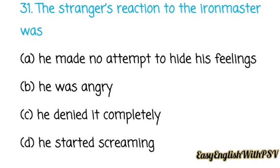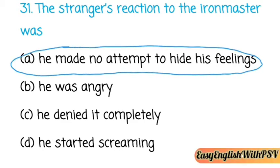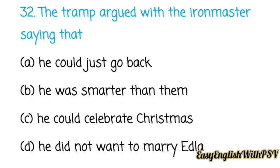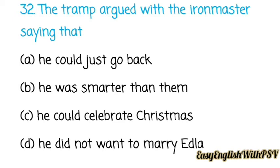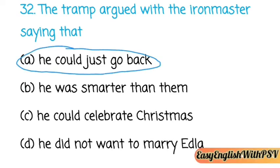Question number thirty-one: The stranger's reaction to the iron master was — he made no attempt to hide his feelings, he was angry, he denied it completely, or he started screaming? The correct answer is option A: he made no attempt to hide his feelings. Question number thirty-two: The tramp argued with the iron master saying he could just go back. The first option is the correct answer.